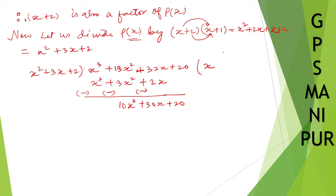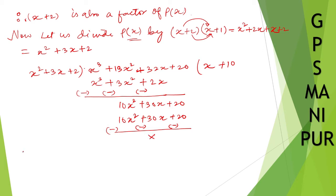Now x into 10 gives 10x squared, 3 into 10 gives 30x, and 2 into 10 gives 20. Subtracting, change the sign, and all will get cancelled, so it is 0. Therefore, x plus 10 is also a factor. So therefore, p of x is equal to x cubed plus 13x squared plus 32x plus 20 equals x plus 1 into x plus 2 into x plus 10.